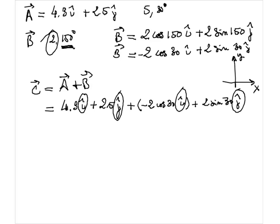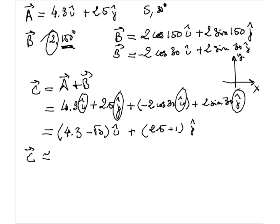We can only group the i's together and the j's together. It's very important to keep track of which terms are i and which are j. Grouping the i terms: I have 4.3 minus 2 times cosine 30°. Cosine 30° is root 3 over 2, so that's 4.3 minus 1.7. Grouping the j terms: 2.5 plus 2 times sine 30°, which is 2.5 plus 1. So roughly, vector C is approximately 2.6i plus 3.5j.